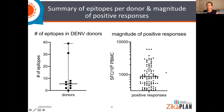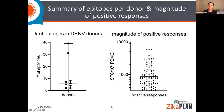In terms of magnitude, you can also see quite a different spread. There are certain areas recognized with high magnitude — meaning the T cells produce a lot of interferon-gamma. There are definitely certain areas recognized at lower levels, but still accounting for a positive response.